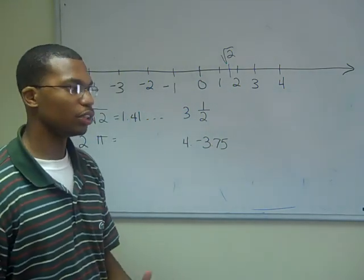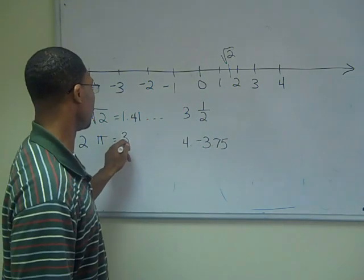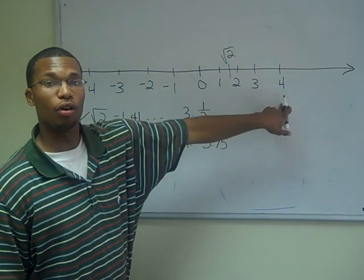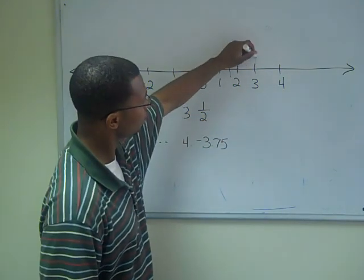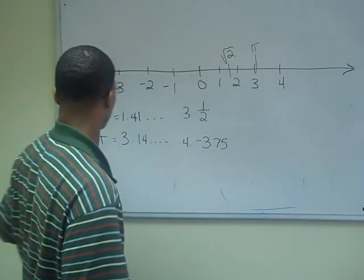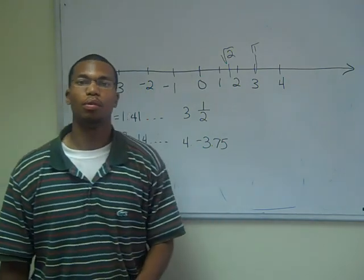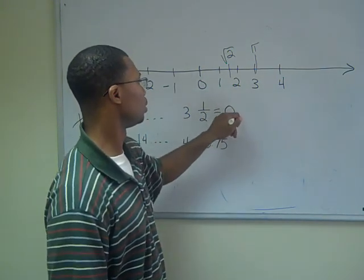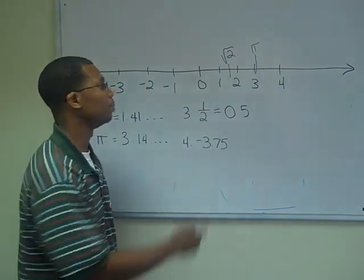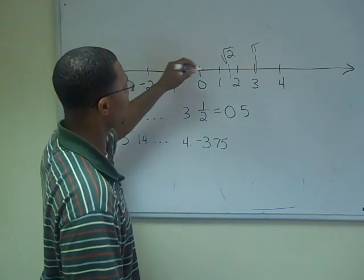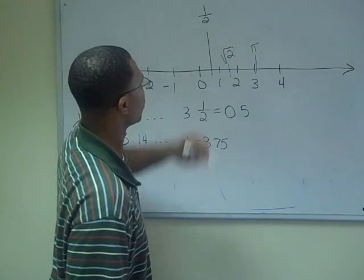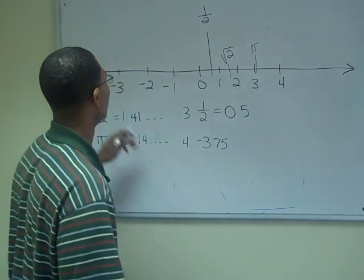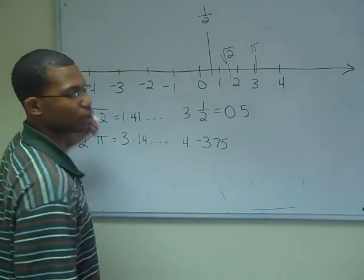Now let's look at pi. Pi we also learned from earlier was approximately 3.14 and so on. So pi would go between 3 and 4 but closer to the 3. Next, 1 half. We learned from earlier that 1 half was equal to 0.5. So 0.5 would go in between 0 and 1, right at the midpoint. And lastly, we have a negative number, negative 3.75. Negative 3.75 will go in between negative 3 and negative 4, but closer to negative 4.